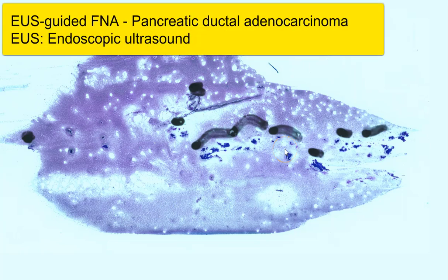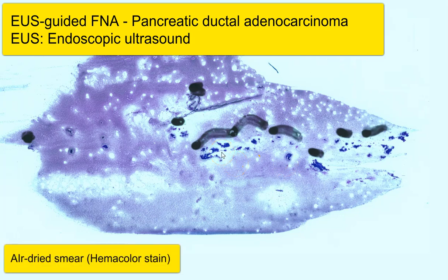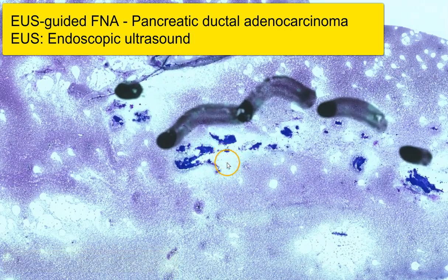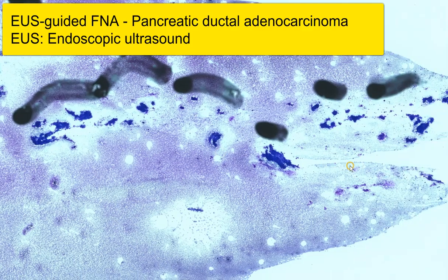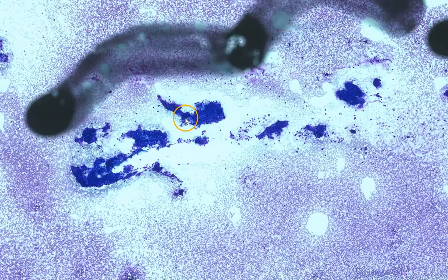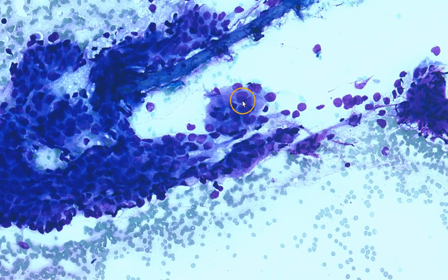This is an EUS FNA of an adenocarcinoma of the pancreas, and we are looking at the hemacolor-stained air-dried smear. You can see that this smear is moderately cellular, and as we zoom into the area of lesional tissue, we can see some cohesive sheets of cells, and the cells appear to be somewhat disorganized. They are not arranged in a very regimented honeycomb arrangement.